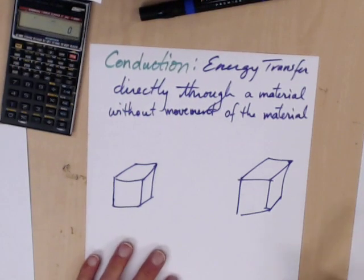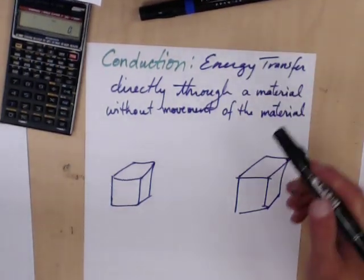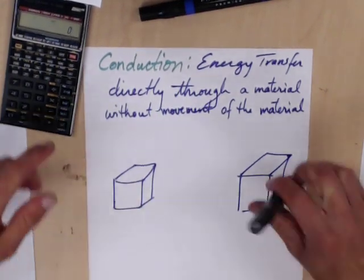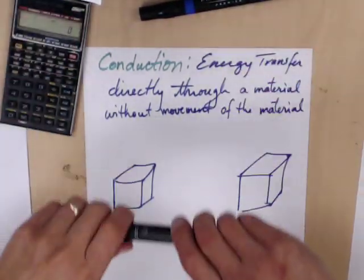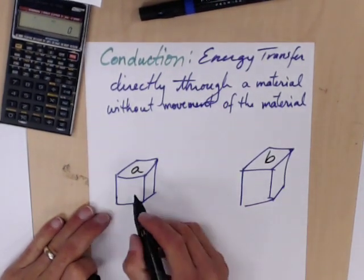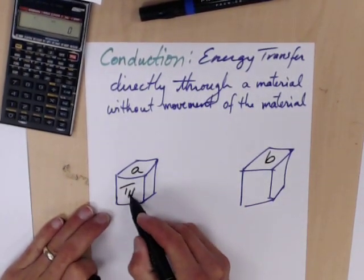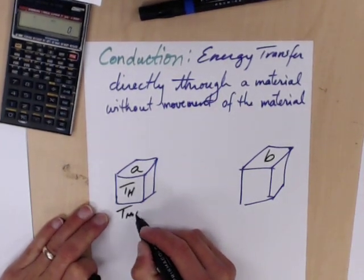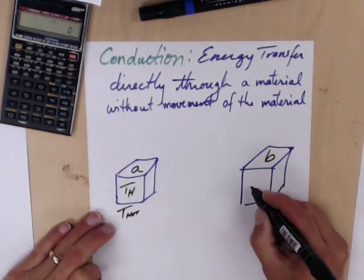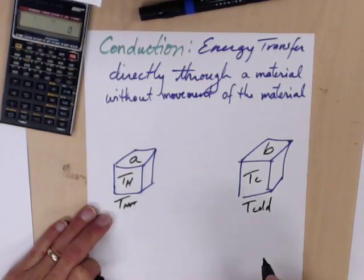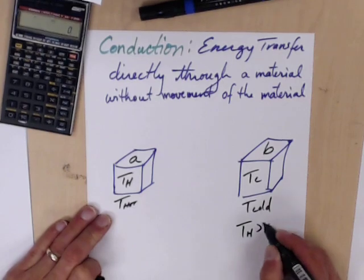Now the one we're going to look at a little bit more is conduction. Conduction is energy transferred directly through a material without movement of the material itself. So here we have two objects. Here's object A and here's object B. Object A is at some high temperature TH or T of the hot side. And then B is at some temperature TC, which is T of the cold side. By definition, TH is greater than TC.